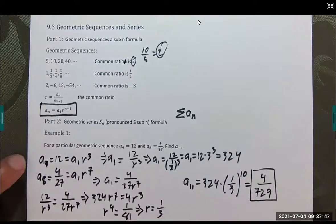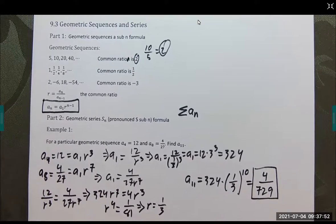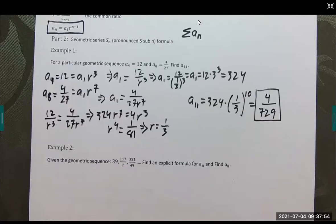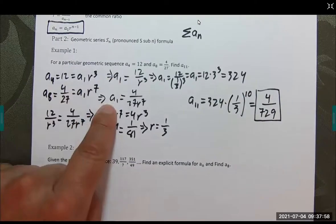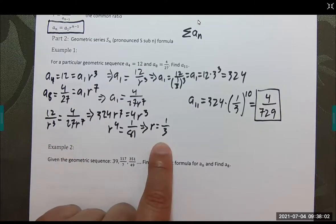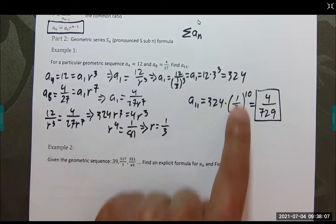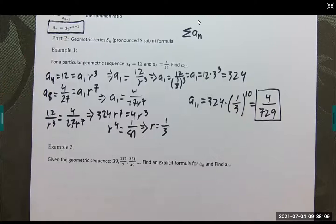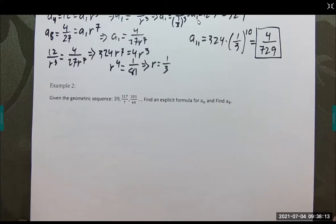Let's recap here. We were given this information. We have two equations with two unknowns. In this case, the unknowns are a sub 1 and r. I got the a sub 1's by themselves, set them equal to one another, solve for r, then plug it back in to get a sub 1. Then go back to the original formula to work it out.